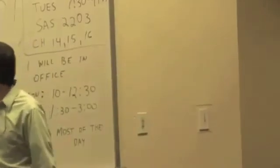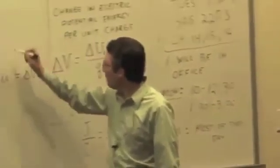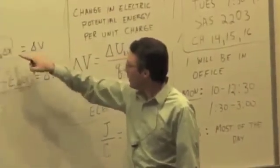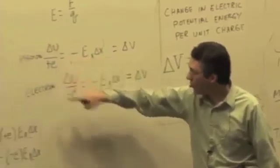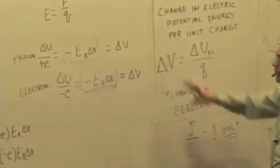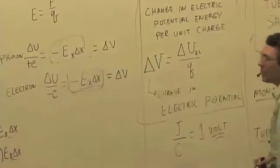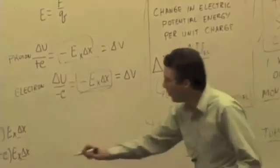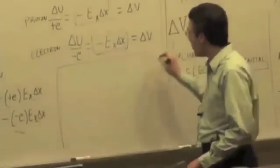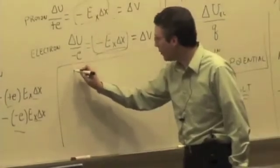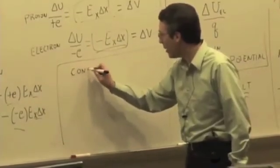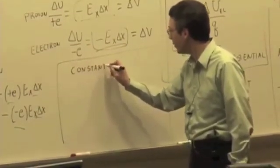Note the relationship, though. We now can say that this delta V is the same for both the proton and the electron. It doesn't depend on the charge. It's still going to be negative E sub X times delta X. And so we can write that more generally for, at least for the case of a constant field, for a constant electric field or a uniform electric field.